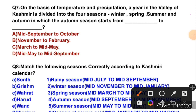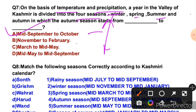Question 7: On the basis of temperature and precipitation, a year in the Kashmir Valley is divided into four seasons — winter, spring, summer, and autumn — in which the autumn season starts from dash to dash. Based on temperature and rainfall, Kashmir's year has four seasons. The autumn season runs from mid-September to October. So the right answer is A. After autumn comes winter, then spring, then summer.